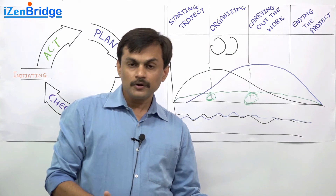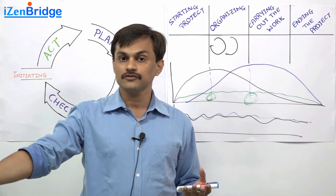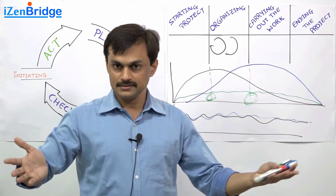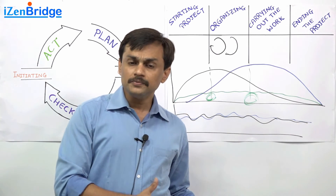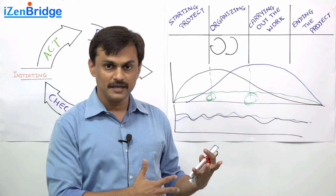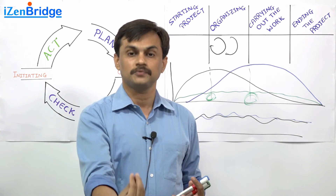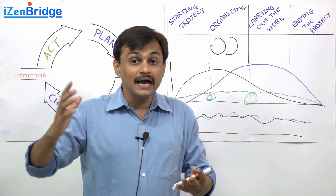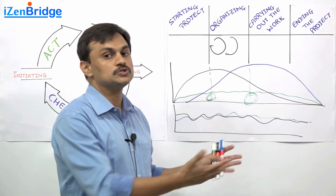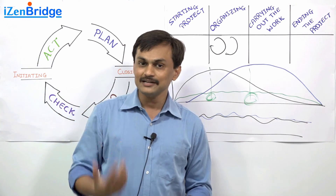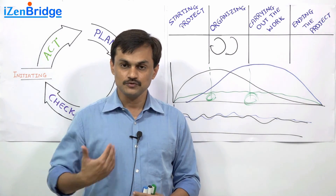Monitoring and Controlling process group processes have some common behaviors — they all look at the plan and data from execution and do variance analysis. That behavior is expected from all monitoring and controlling processes. Similarly, Executing process group processes will pick up information from the project management plan and apply that plan in the real world. Planning process group processes either initiate the first-time plan or revise the existing plan. Going forward, we will get into the details of each process, and the segregation of process groups will become very clear as we proceed.